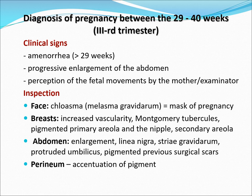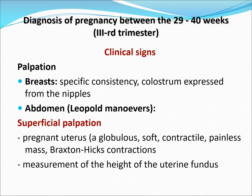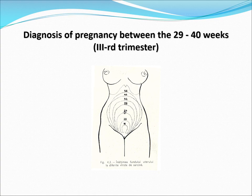For the third trimester, it's still amenorrhea, enlargement of the abdomen, and perception of fetal movement by the mother. By inspection, these are still the changes noted. By palpation, your abdomen — especially the Leopold's maneuvers — could be done, especially in the third trimester. This covers the 29 to 40 weeks diagnosis of pregnancy, and this is your fundic height.